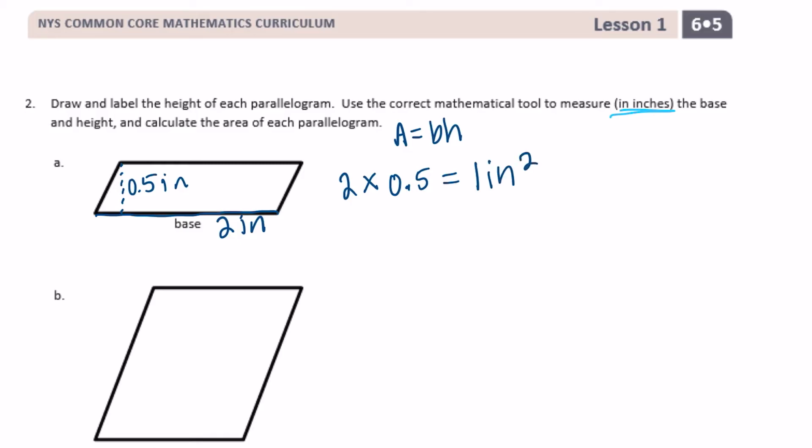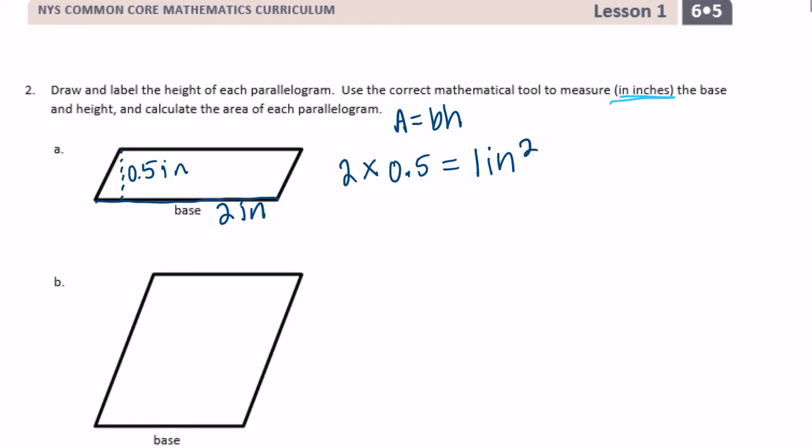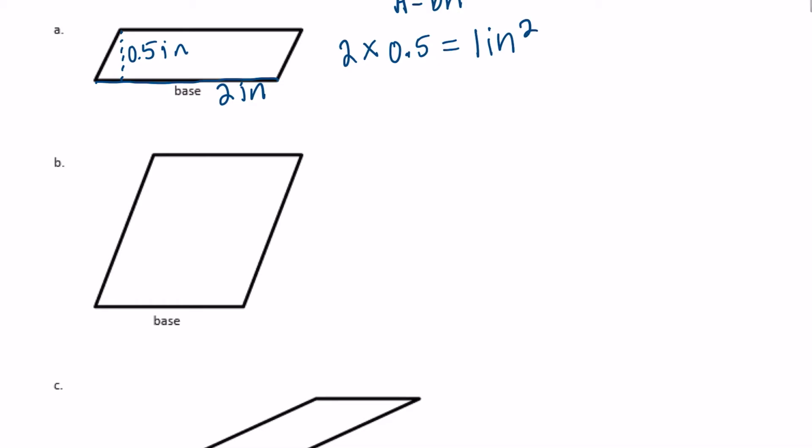B, again we're going to do base times height. Here the base when I measure is one and a half inches, and the height from the base all the way to the top is two inches. So let's do one and a half inches times two. That would be two groups of one and a half. One and a half plus one and a half would be three inches squared, so the area of that is three inches squared.